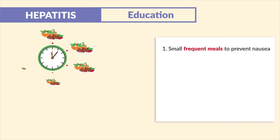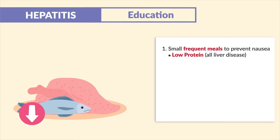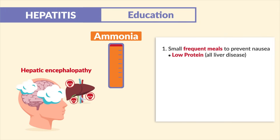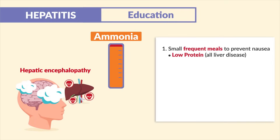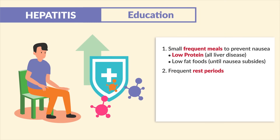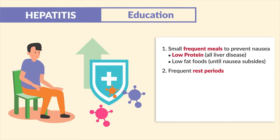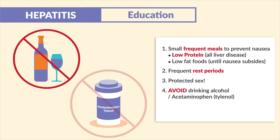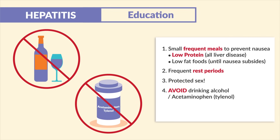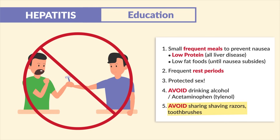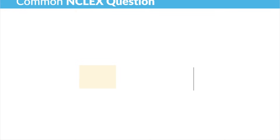For patient education: provide small, frequent meals to prevent nausea, with low protein to decrease ammonia levels and prevent hepatic encephalopathy. Teach low-fat foods until nausea subsides, frequent rest periods to boost the immune system, and protected sex — especially for hepatitis B and C. Patients must avoid alcohol and acetaminophen (Tylenol), both harmful to the liver, and avoid sharing razors and toothbrushes.